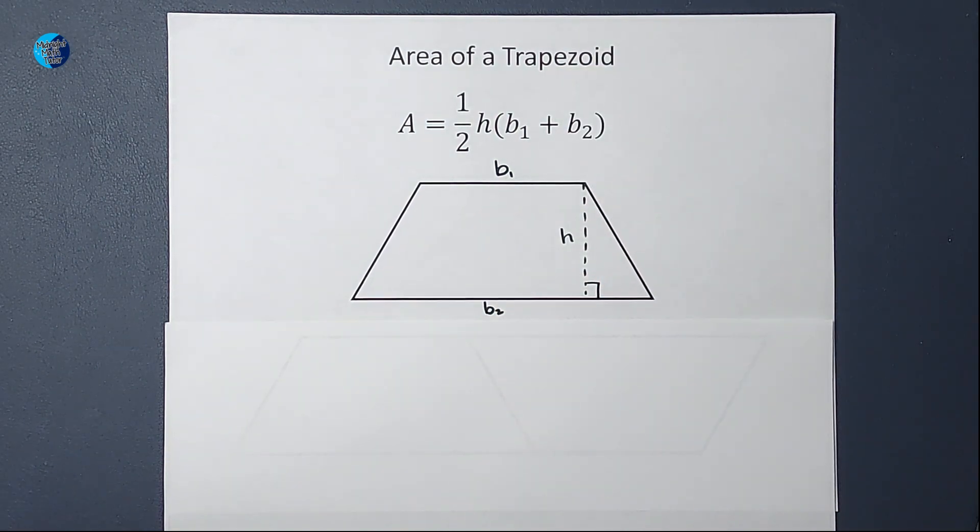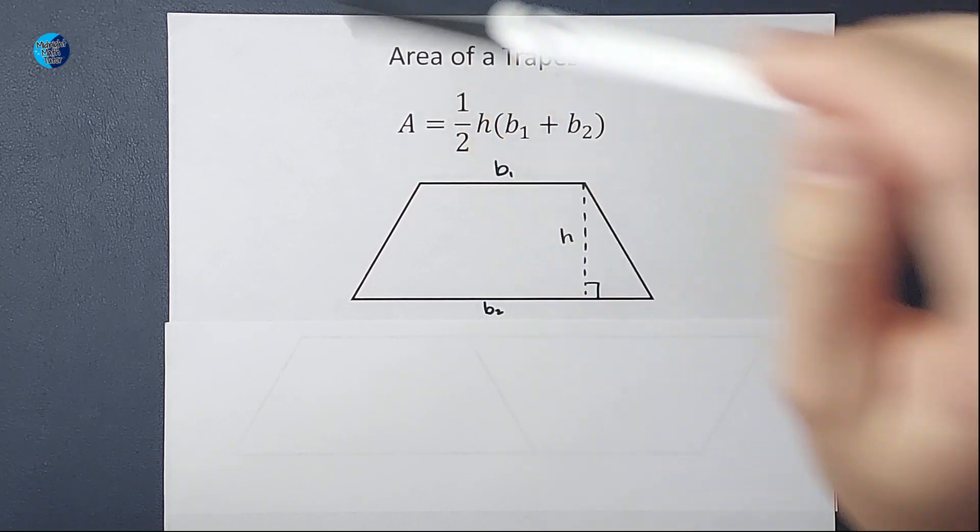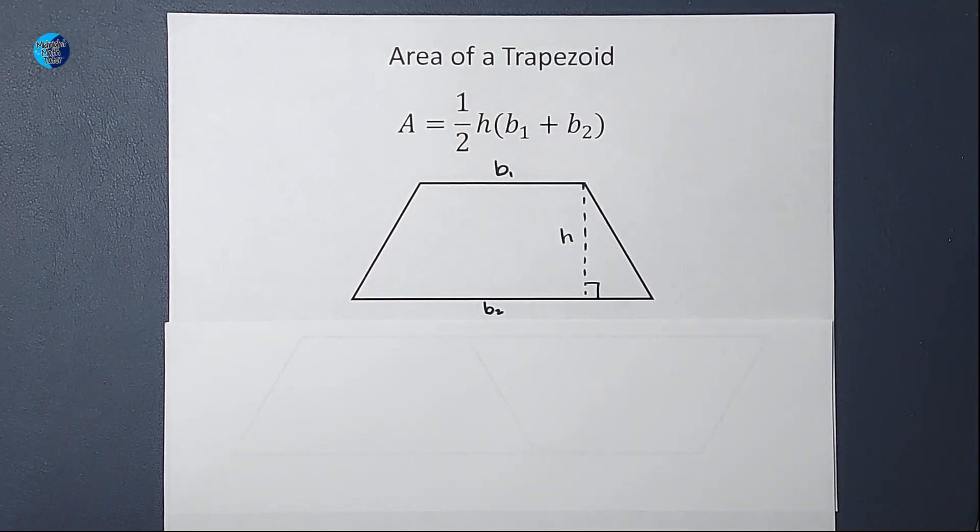So if you're looking at this and you're like, okay, so why if I add those two together, multiply by that, and then times by half, why does that give me the area, right?